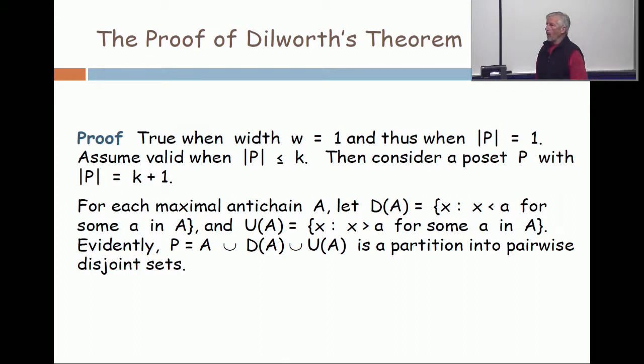So what about a one-point poset? Here it is. What is the width of this poset? The maximum size of an anti-chain. Unless you've been asleep, you know that one element constitutes an anti-chain. And it's pretty clear that the biggest size an anti-chain can have if there's only one point is one.